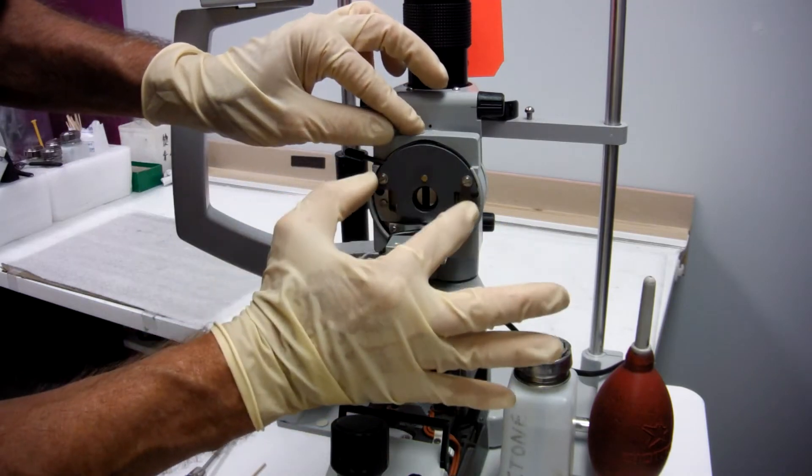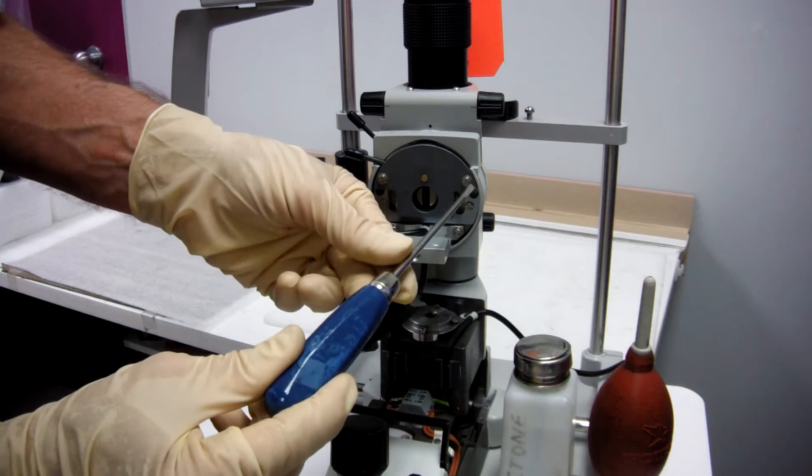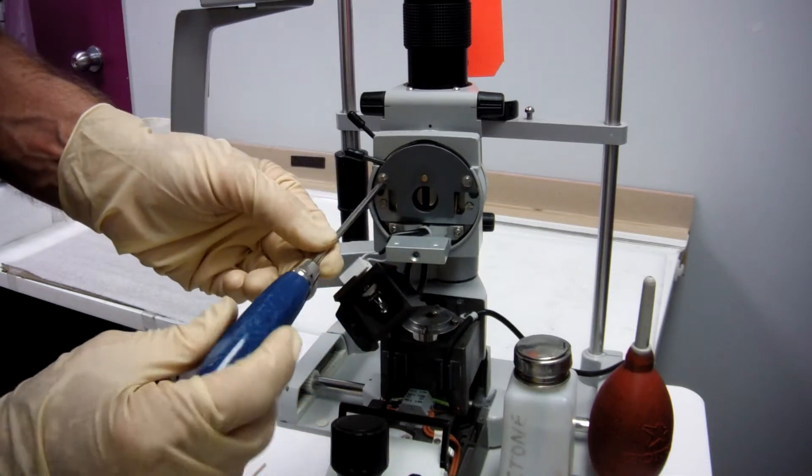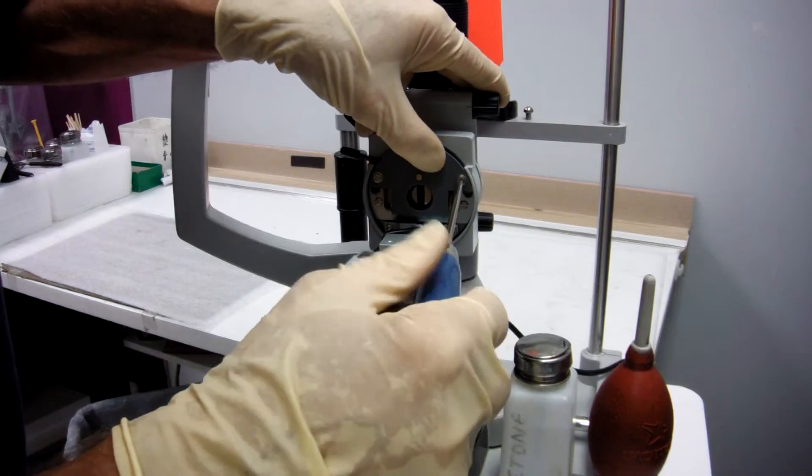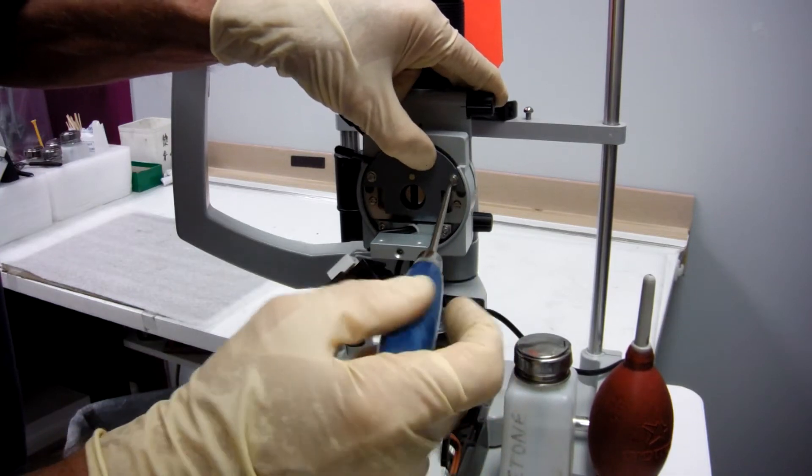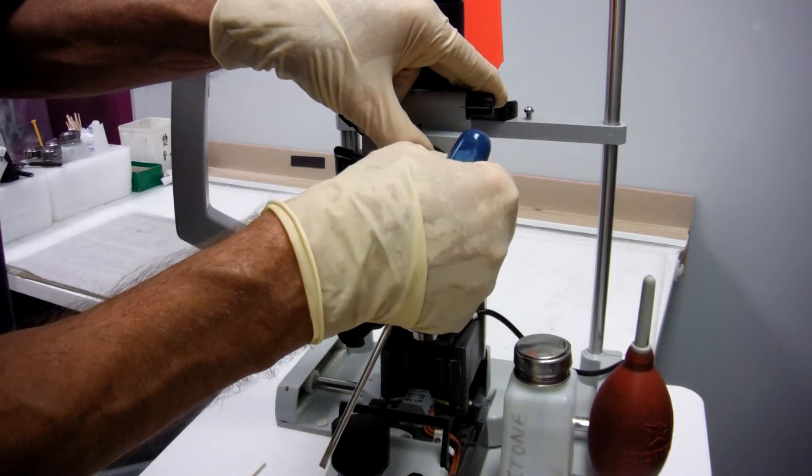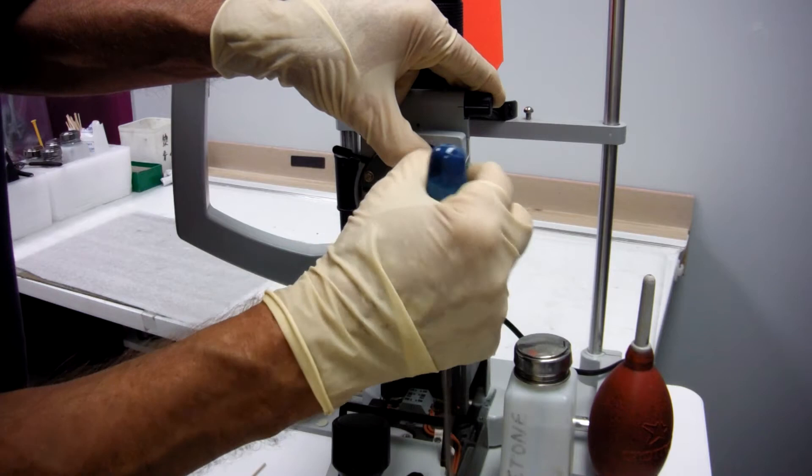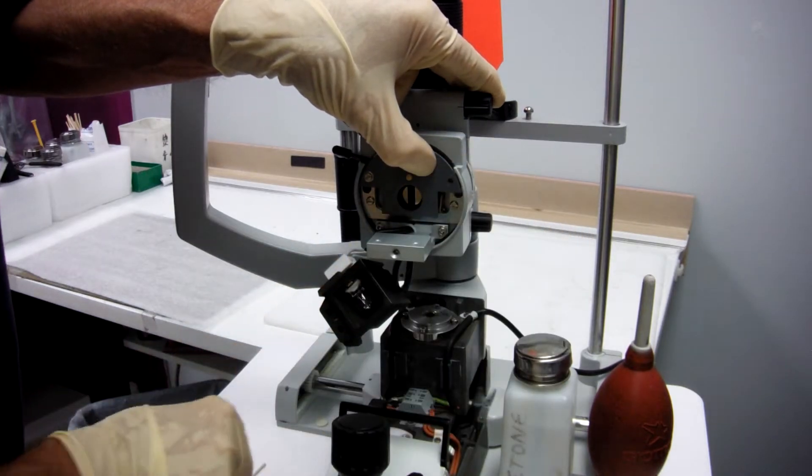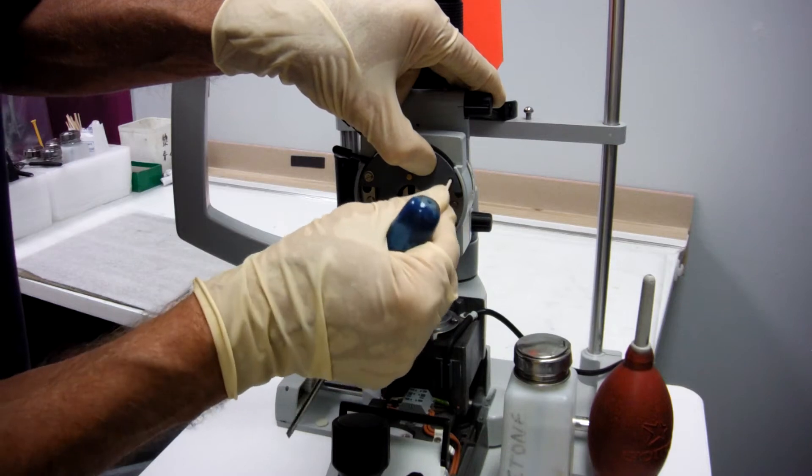You can take off the diaphragm assembly by these two screws. Take the screw out and I'm going to put a toothpick in its place.